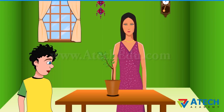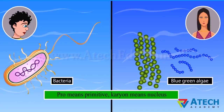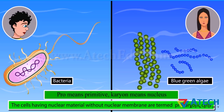Is nucleus same in all multicellular organisms? No. The nucleus of the bacterial cell is not well organized like the cells of multicellular organisms. There is no nuclear membrane. The cells having nuclear material without nuclear membranes are termed prokaryotic cells. Bacteria and blue-green algae are examples of prokaryotic cells.